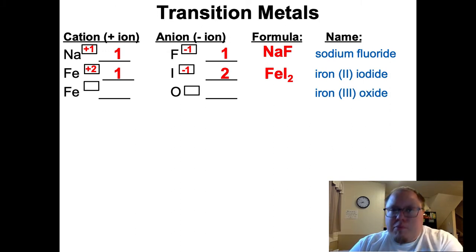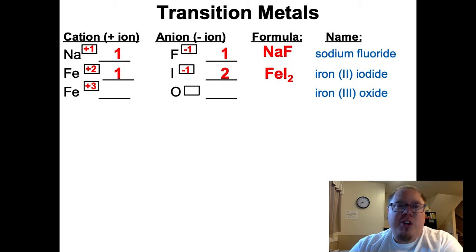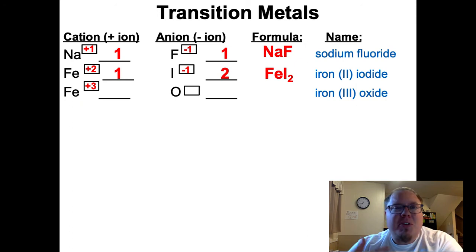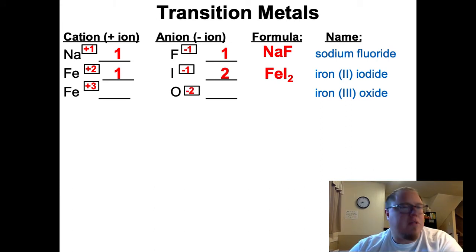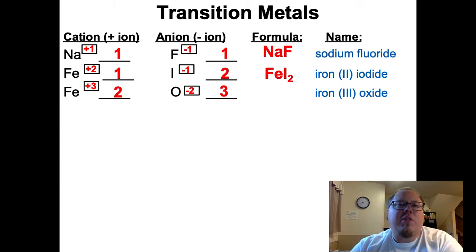Let's try another one: iron 3 oxide. Iron can have a 2 charge or a 3 charge. So iron 3 - Roman numeral III - tells me it is iron with a plus 3 charge. Oxygen is paired with it, and the oxygen family always has a negative 2 charge. So this is a positive 3 and negative 2 situation. This is a 2 to 3 ratio in order to balance those charges out. So this would be Fe2O3 - that's iron 3 oxide.